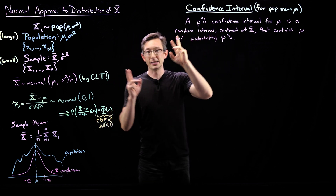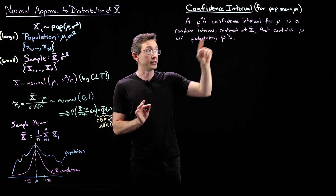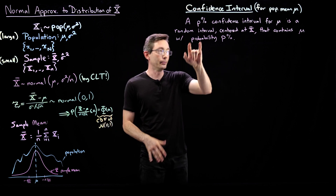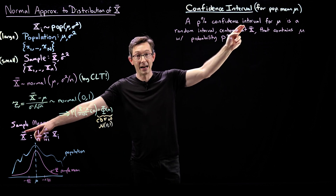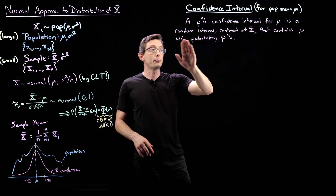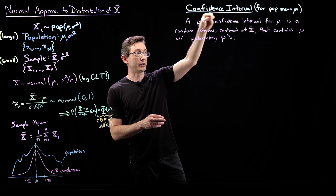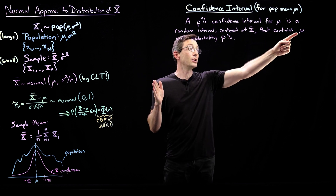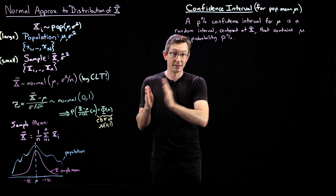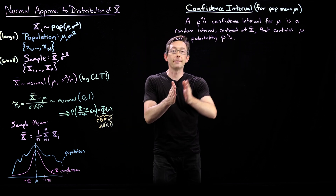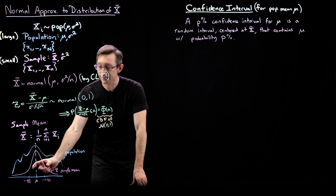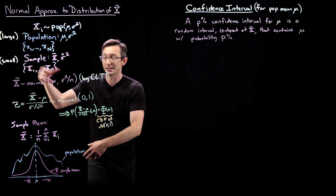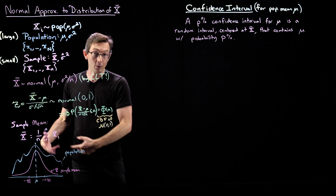A confidence interval — we say a p% confidence interval, let's say a 95% confidence interval for mu — is a random interval centered at our best guess x-bar that contains mu with some probability p%. It's x-bar plus or minus some value so that mu is 95% likely to be in that x-bar plus or minus whatever value. We're trying to find the size of the interval around x-bar so that we're 95% sure that, if we repeated this sampling a bunch of times, 95% of those times mu would be in that random interval.